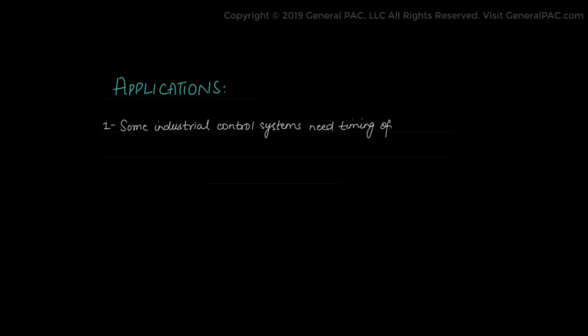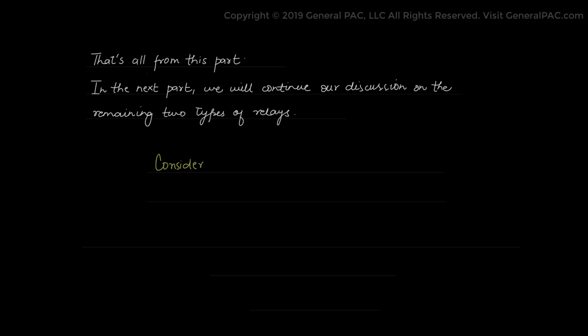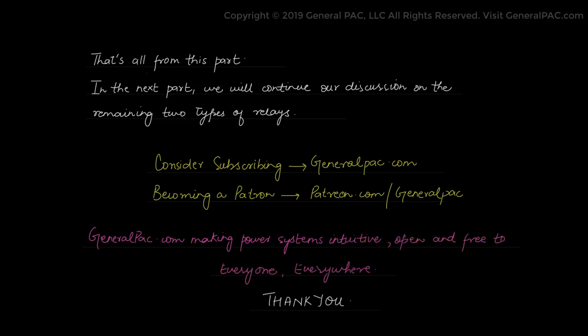Some applications of time delay relays include industrial control systems needing timed operation. Time delays are used to provide desired time delay and timing functions. That is all for today's part. In the next part, Part 2E, we will continue our discussion on the two remaining types of relays. We hope you find this content useful and enlightening. Please consider subscribing to GeneralPAC.com or becoming a patron at Patreon.com slash GeneralPAC, making power systems intuitive, open, and free to everyone, everywhere.